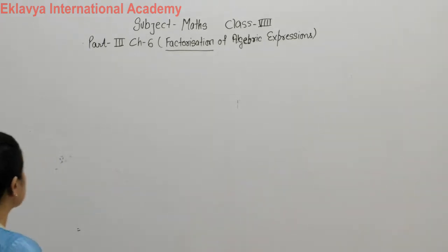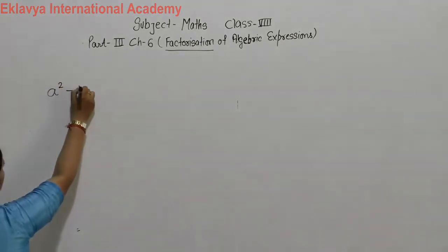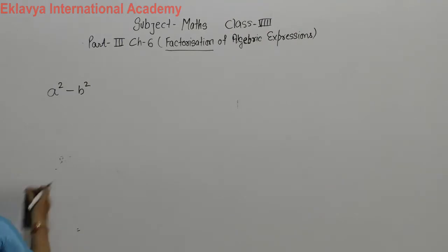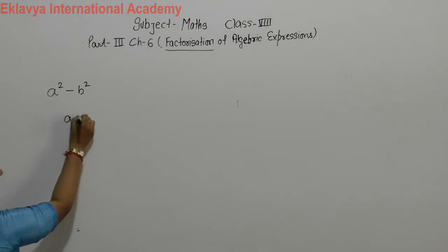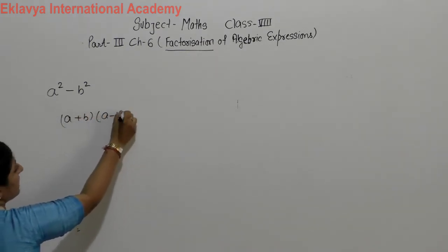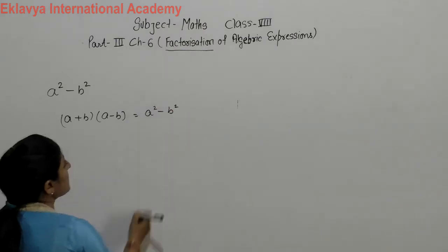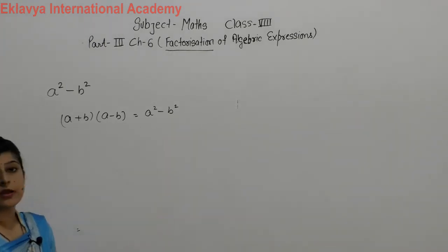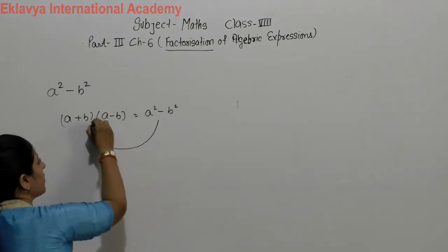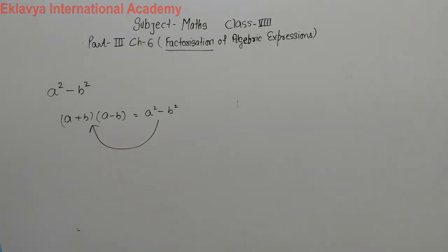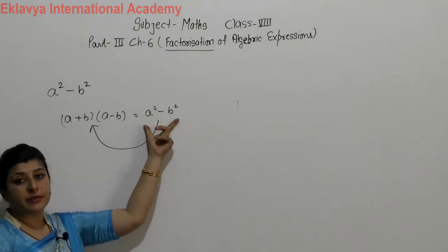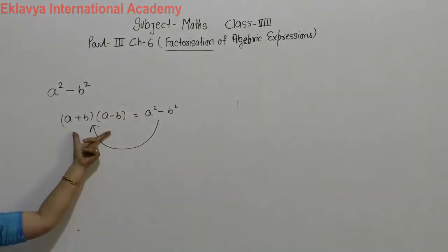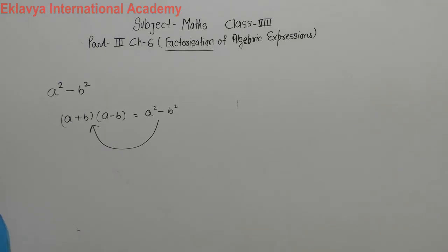Today we will discuss the factor of A² minus B². We already discussed the identity (A+B)(A-B) = A² - B². When we evaluate this identity, we find the result A² - B². Now when we want to find the factors, we can convert this type of algebraic expression directly into the form (A+B)(A-B).